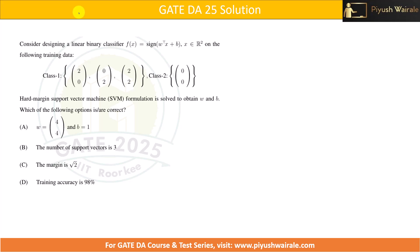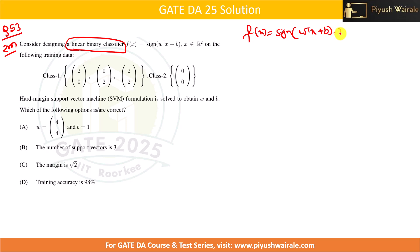In this video we discuss question number 53 of GATE 2025 exam, which was asked for two marks. Consider designing a binary classifier with function f(x) = σ(w^T x + b) where x ∈ ℝ². We have two training classes — class 1 and class 2 — and a hard margin support vector machine formulation is solved to obtain the weights w. Which of the following options are correct?